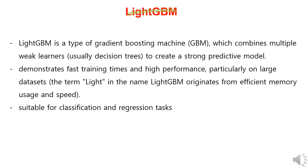The LightGBM model is a type of Gradient Boosting Machine model that combines multiple weak models, mainly decision tree models, to create a powerful predictive model. It exhibits fast training speed and high performance, especially effective on large datasets. The 'Light' in LightGBM comes from its efficient memory usage and speed. The LightGBM model can be used for both classification and regression tasks.